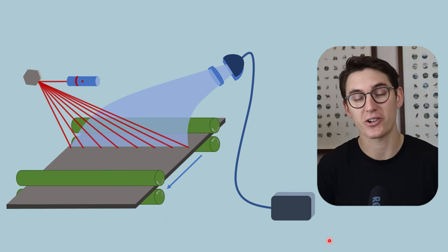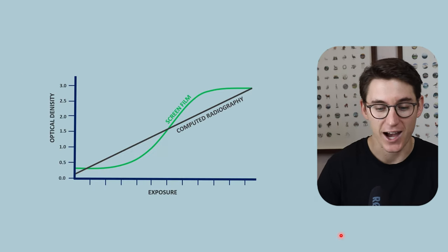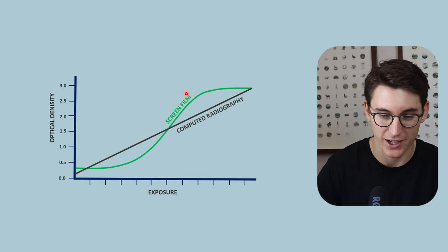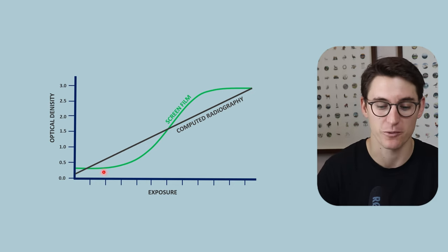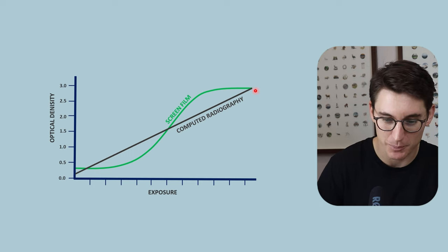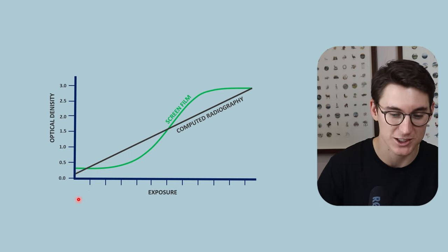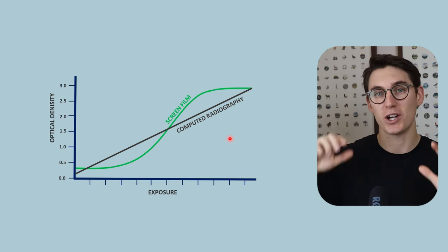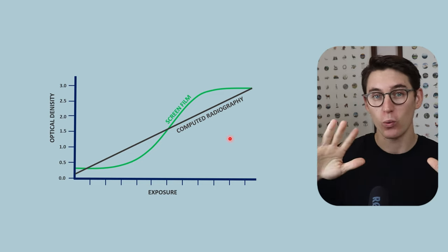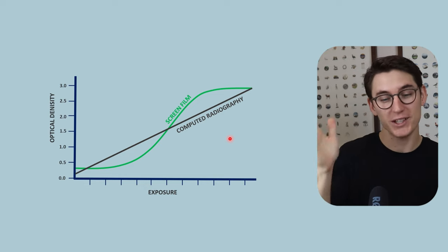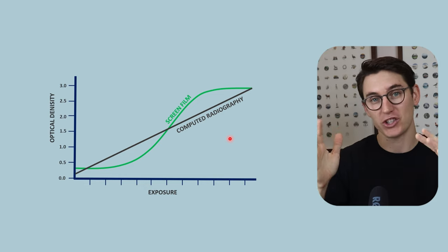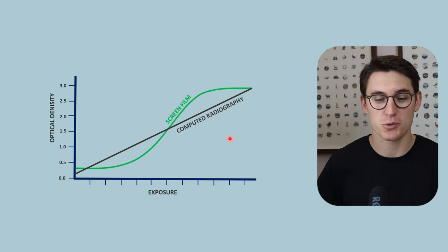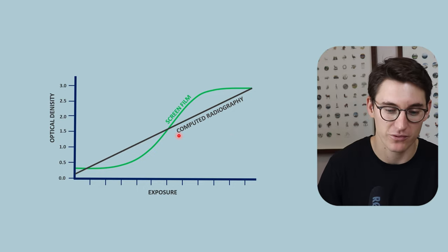Because we've created a digital image, the dynamic range of this image is much greater than the characteristic curve of screen film. We have specific pixel values for each exposure on our computed radiograph cassette. Once we've created our digital image, we can change the exposure, change the steepness of the graph, change the contrast within our image, and manipulate those pixel values much more than we could with screen film cassettes.